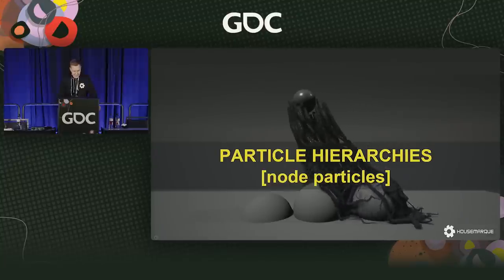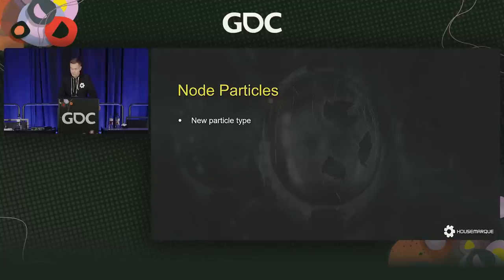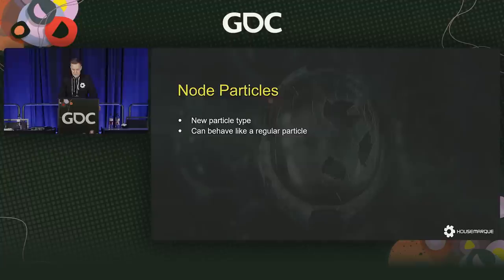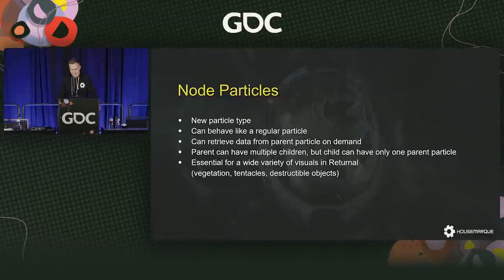Now we can move on to particle hierarchies, which are essentially node particles in our system. When we started developing Returnal, node particles were a new thing for us — they were developed for branching vegetation in another project but turned out to be very useful for Returnal as well. The concept is simple: node particles are just like any other particle in our engine, but they can all read the data that their parent actually has. A parent can have multiple children, but a child can only have one parent, and parent and child need to be the same particle type. We ended up using them for ribbons, vegetation, tentacles, and all kinds of things.